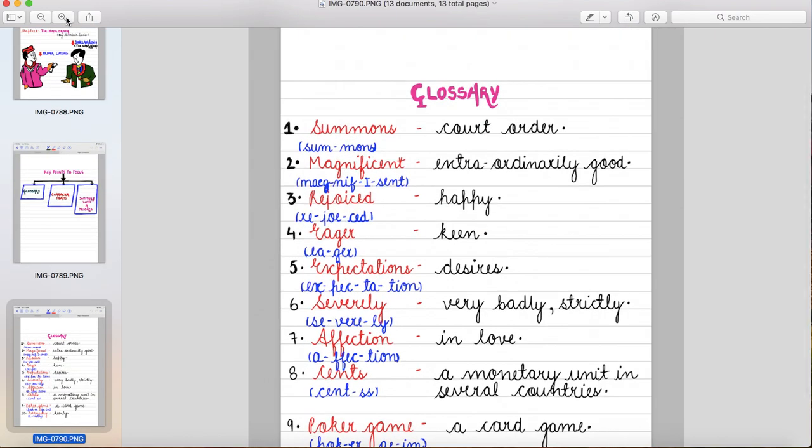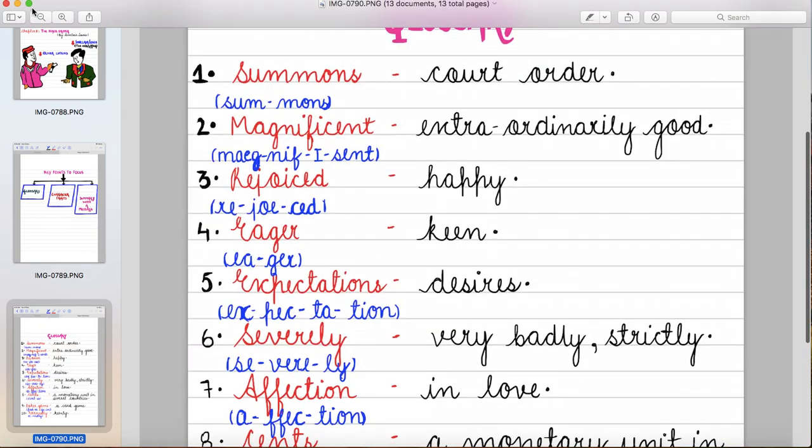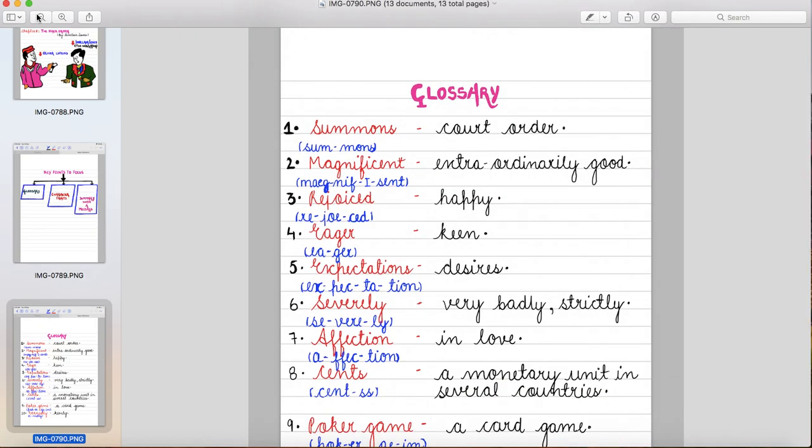Now let's see the meanings of the difficult words. First is summons that means court order. Second magnificent that means extraordinarily good. Third rejoiced that means happy, kush.